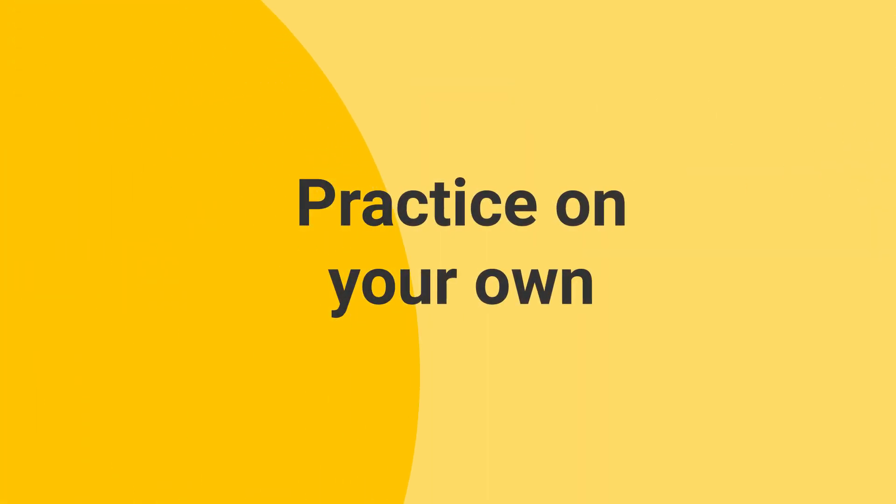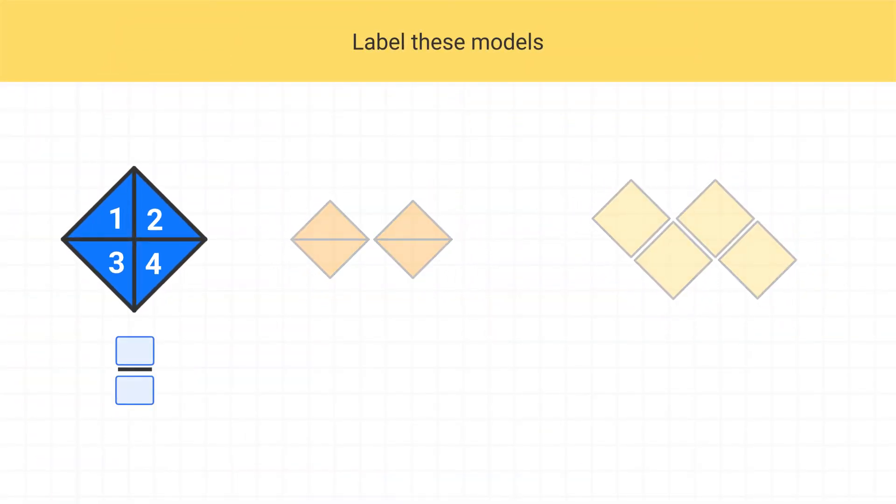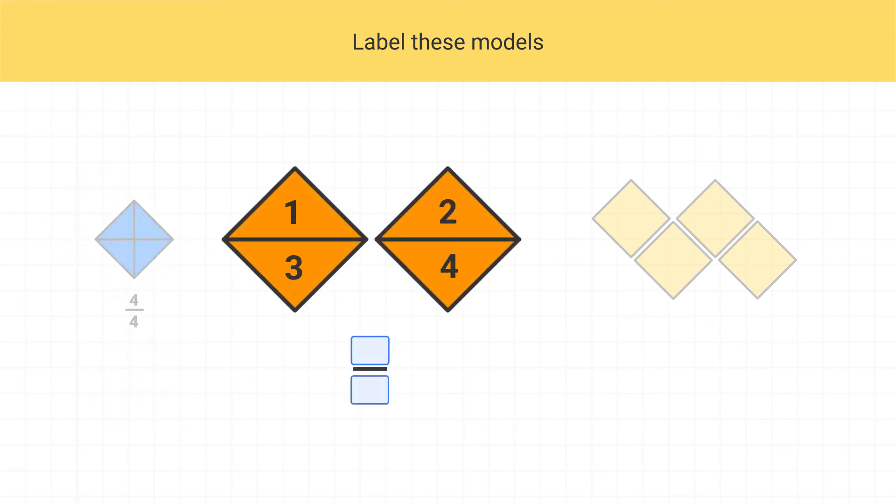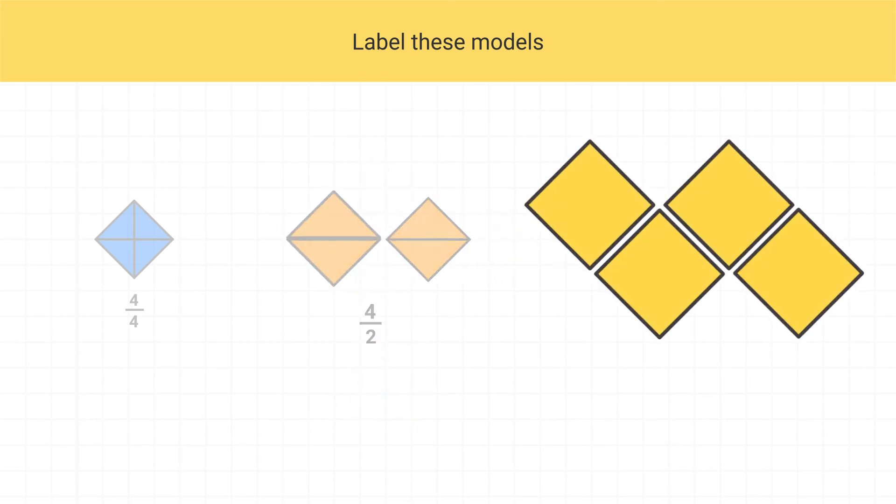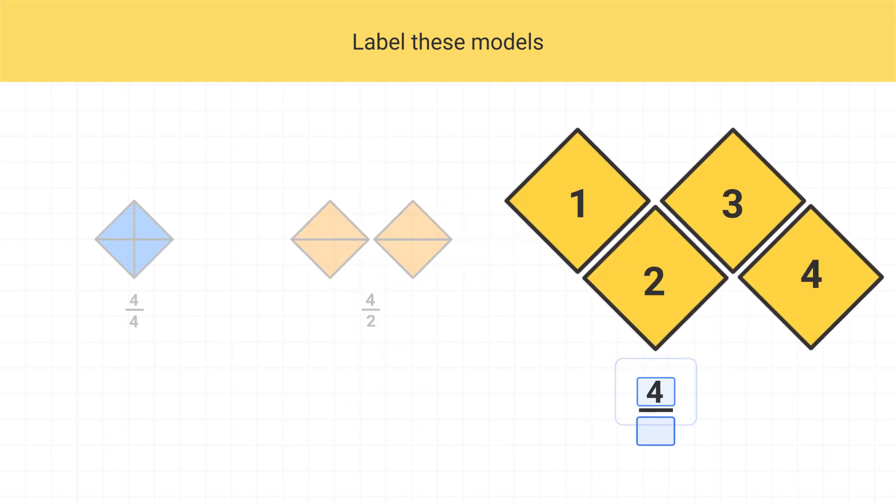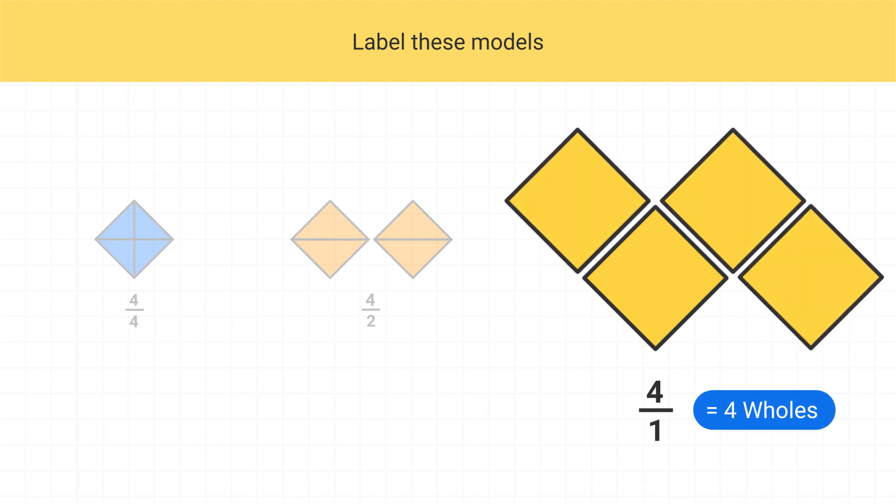Now it's time for you to do some practice on your own. Label these models. Well, the first model has 4 shaded pieces, and each piece is a fourth. This is 4 fourths. The next model also has a total of 4 shaded pieces, but each of those pieces is a half. So this is 4 halves. The final model, it also has 4 shaded pieces, but each of these pieces are an entire square or a whole square. And so the denominator is 1. This is 4 wholes.